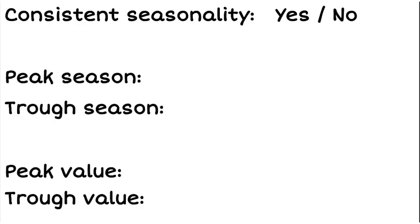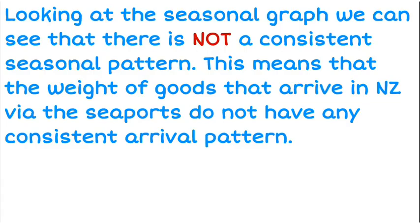So do I have consistent seasonality? No, I do not. So when I come to interpret this, looking at the seasonal graph, we can see there is not a consistent seasonal pattern. In context, this means that the weight of goods that arrive in New Zealand via the seaports do not have any consistent arrival pattern. And that's my analysis that I would do for seasonality.